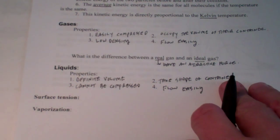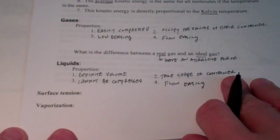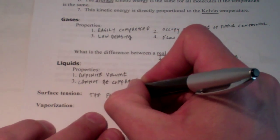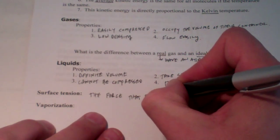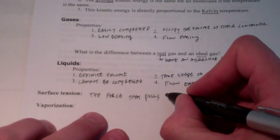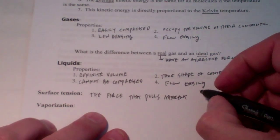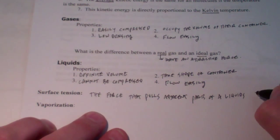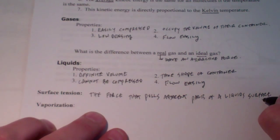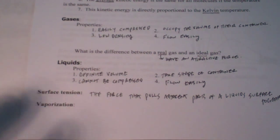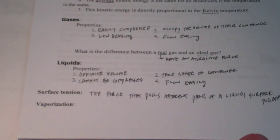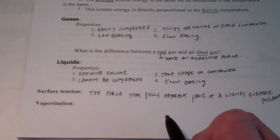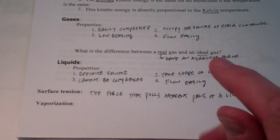A couple of vocabulary terms we need to cover. Number one is surface tension: the force that pulls adjacent parts of a liquid surface together. This causes droplets of water or liquid to take on a spherical shape. That spherical shape allows them to occupy the smallest volume possible because they're being pulled towards each other.